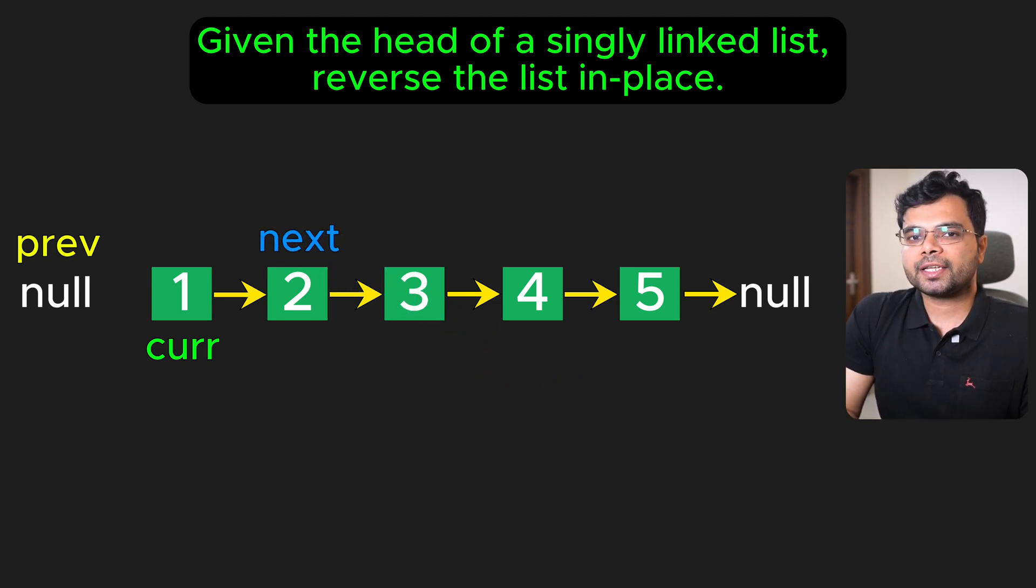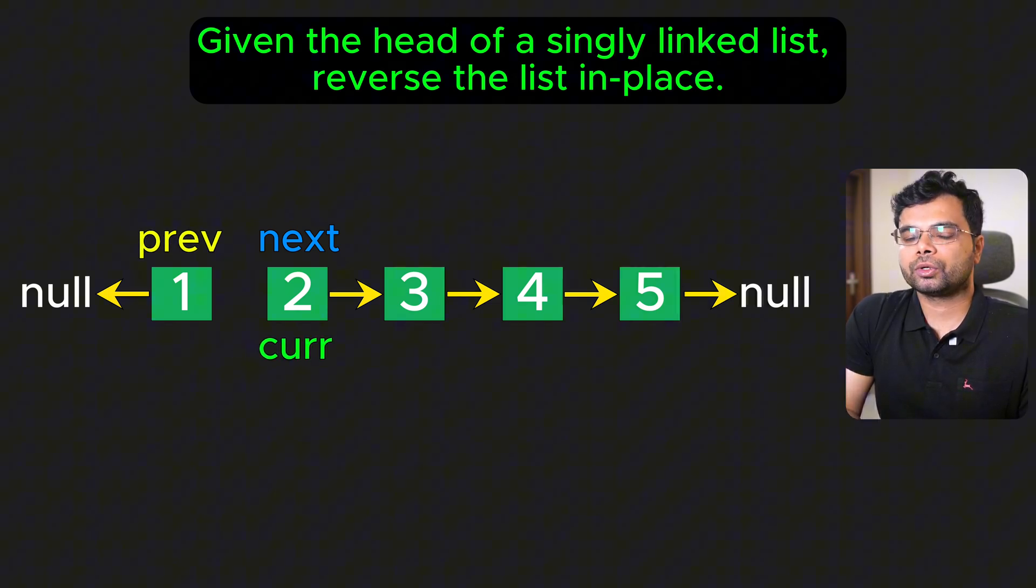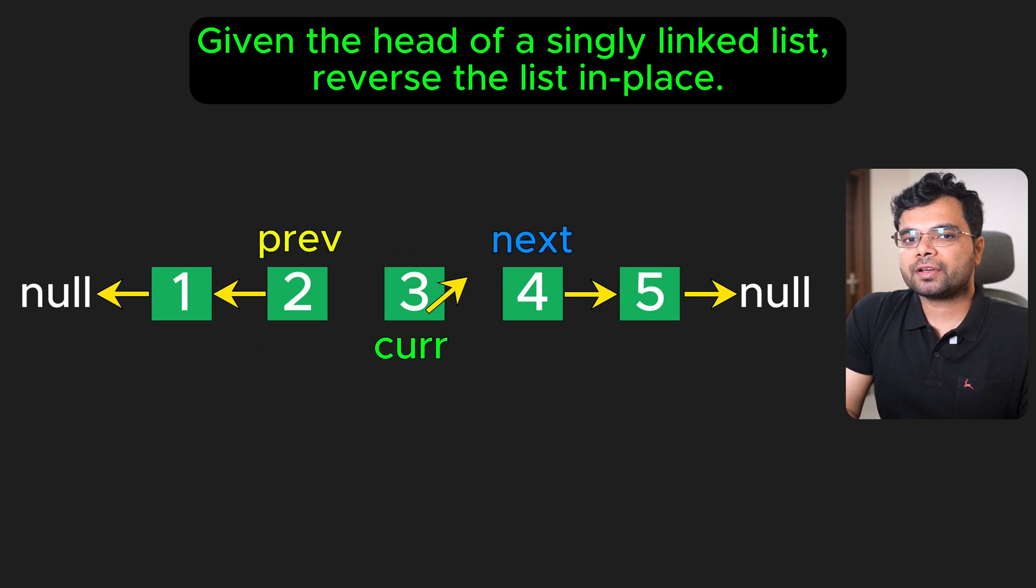save the next node in the next pointer by setting next to current.next. Reverse the link at the current node by setting current.next to previous. Move previous pointer to current as we have finished processing this node, and move the current pointer to next to process the next node. We repeat this process until we have reversed the entire list.